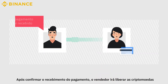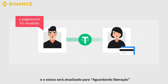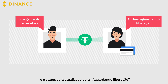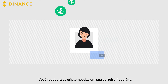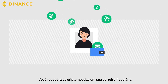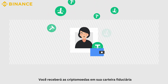The seller will release the crypto after confirming the payment is received, and then the status will be updated to "to be released". The transaction will be completed. You will find the cryptocurrencies in your fiat wallet.